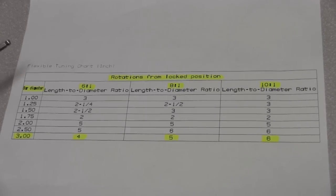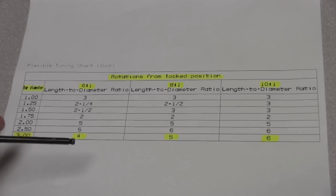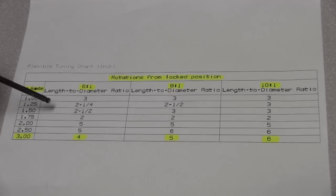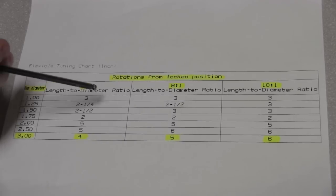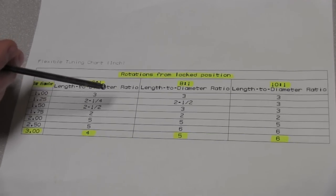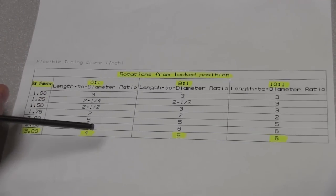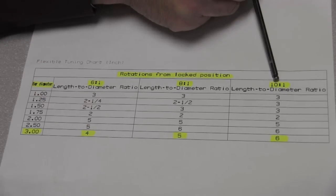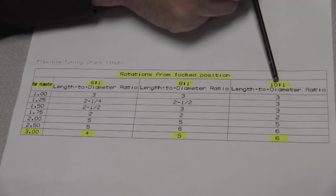Now with every bar that we send out is a set of instructions and on that instruction sheet is this chart. What it is is the amount of counter-clockwise turns it's going to take to adjust the bar. Now every bar we send comes preset at a 10 to 1 length and diameter ratio.